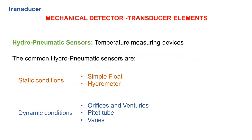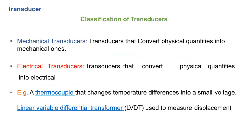So that covers the definitions and elements that act as transducers from the last session. Today we will move to the classification of transducers. There are various types of classification we can make — based on structure, based on function, or based on physical quantities as inputs. Broadly, we can say mechanical transducers and electrical transducers. Mechanical transducers are those that convert physical quantities into mechanical ones — for example, manometers.